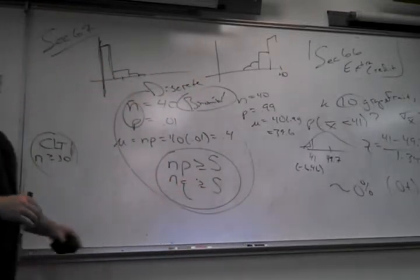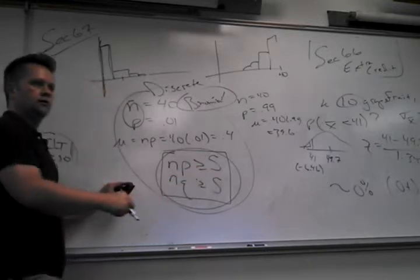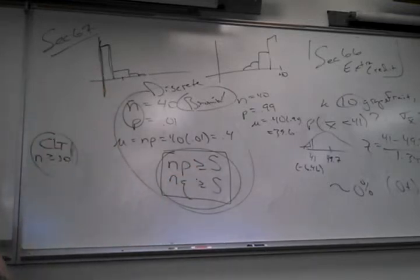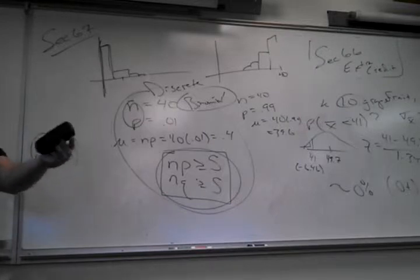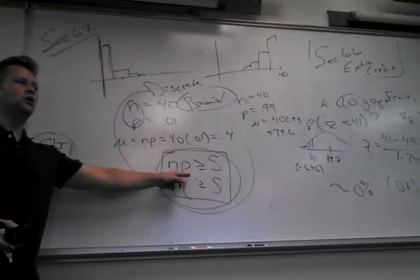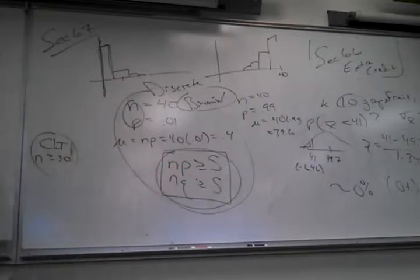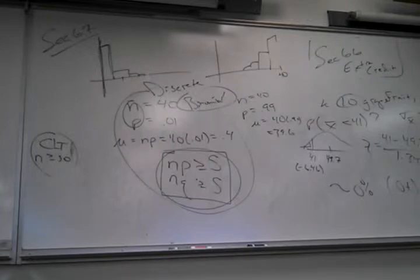The most important thing to come out of section 6.7: if I can say it's normal enough, I know everything about it — I have the whole z-score chart. If I can't say it's normal enough, I basically don't know anything. That's a very important hurdle to jump. For a binomial, the check is NP and NQ both at least 5.